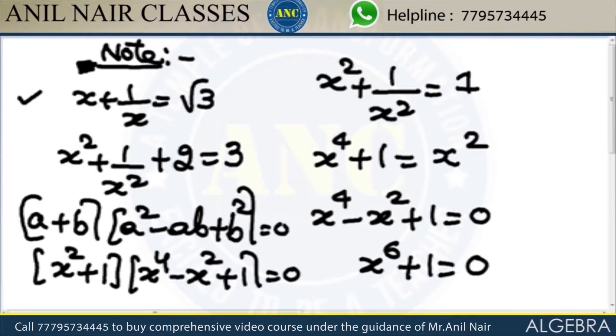Very important identity. If x plus 1 by x is root 3, x power 6 will be minus 1. Please write down SSC, staff selection commission, original question. X power 6 equal to minus 1. Any student who is preparing for SSC, this is taken from previous year papers.